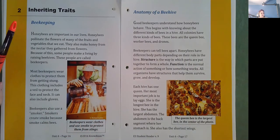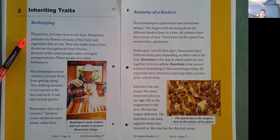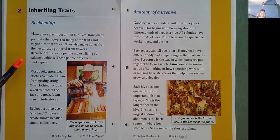Inheriting traits. Beekeeping. Honey bees are important in our lives. Honey bees pollinate the flowers of many of the fruits and vegetables that we eat. They also make honey from the nectar they gathered from flowers. Because of this, some people make a living by raising beehives. These people are called beekeepers.